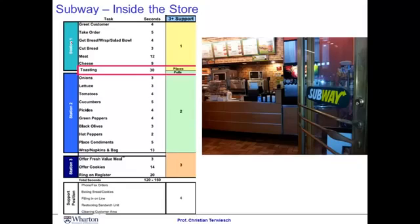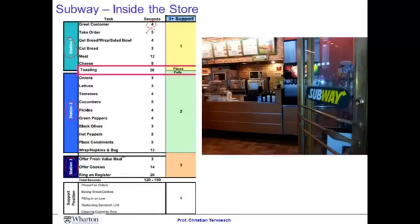Time to go inside the restaurant. From some training materials that Subway kindly shared with me, I now know there are a couple of tasks that need to be carried out to make a sandwich. There are three workers and three stations making Subway sandwiches. The work starts at station one with greeting the customer — that takes four seconds — followed by five seconds to take the order. Adding up all the activities at station one gives a total of four plus five plus four plus three plus twelve plus nine, which equals 37 seconds per customer.